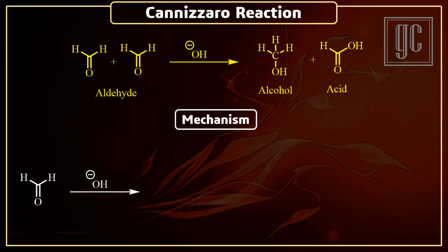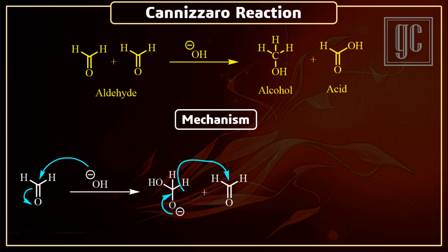Now we are going to discuss the mechanism of the reaction. In the presence of the strong base, the hydroxyl ion attacks on the carbonyl carbon of the aldehyde. As a result, the pi electrons of the carbonyl bond are moved to oxygen and a negative charge is generated. Next is a very important step: the negative charge comes down and the hydride ion leaves the molecule as a leaving group.